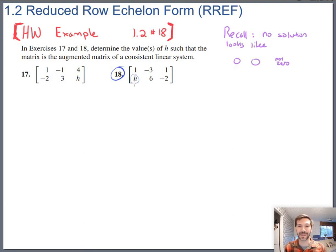There's nothing different about H. It's still going to be negative H times the first row added to the second row becomes the new second row. So let's do that.